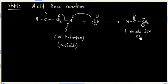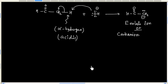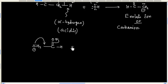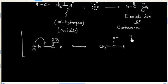This ion is also called a carbanion. Now, this enolate ion is resonance-stabilized. So we can write a resonating structure. We have 2 resonating structures for the enolate ion.